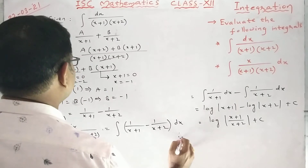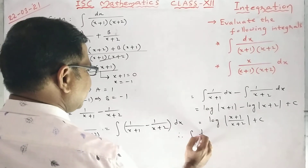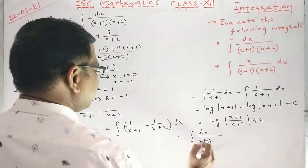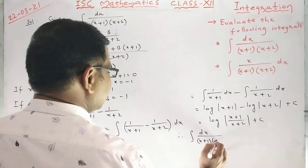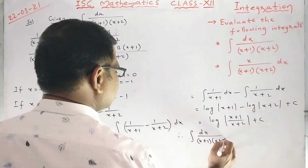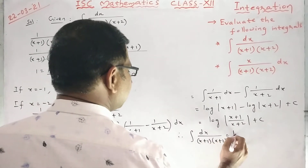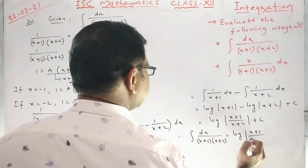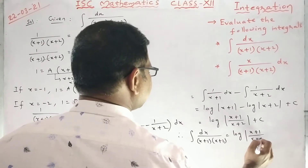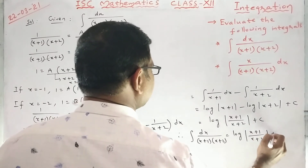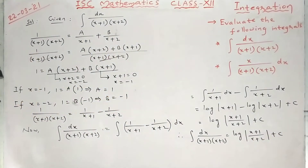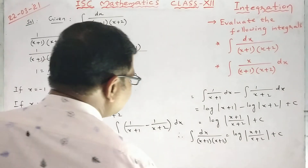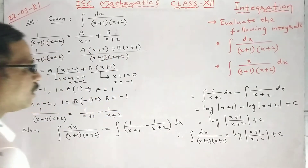Log A minus log B can be written as log(A/B) plus C. Therefore, the integral of dx/[(x+1)(x+2)] equals log|（x+1)/(x+2)| + C. That is the solution for the first problem.